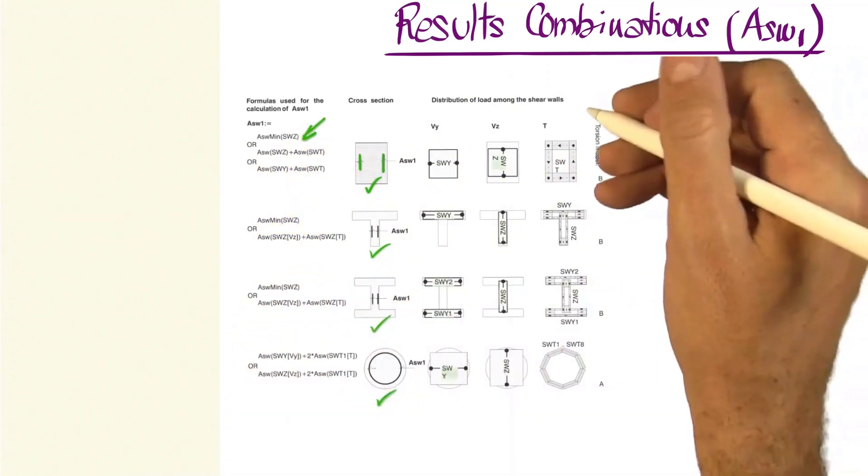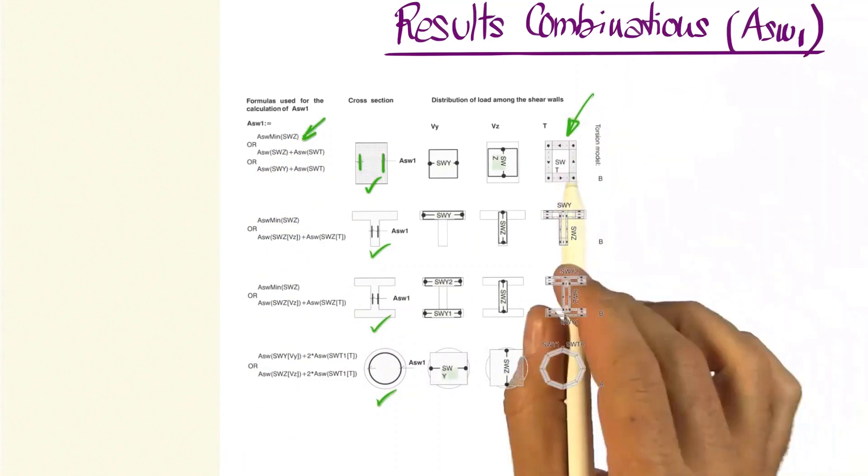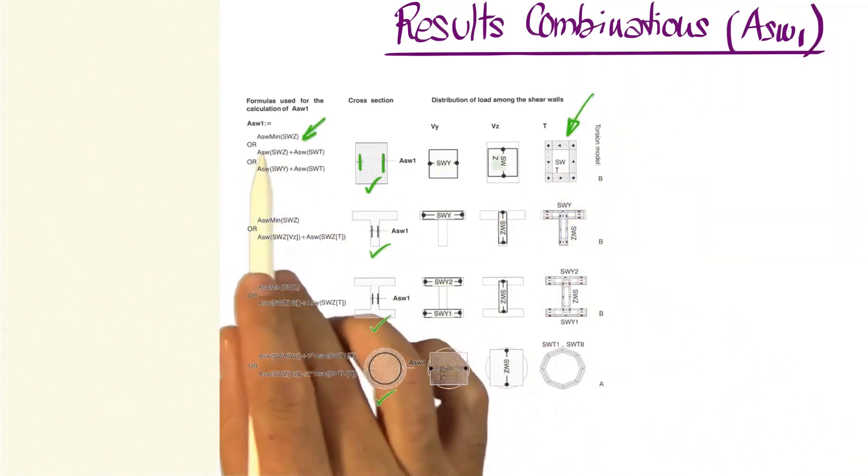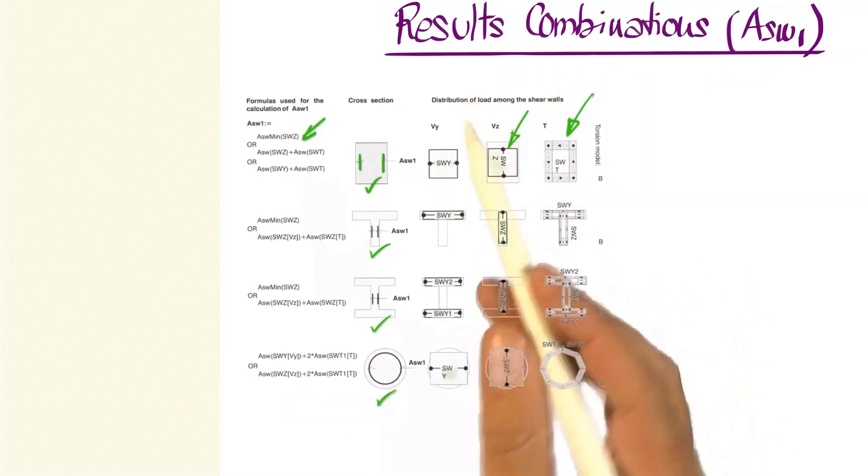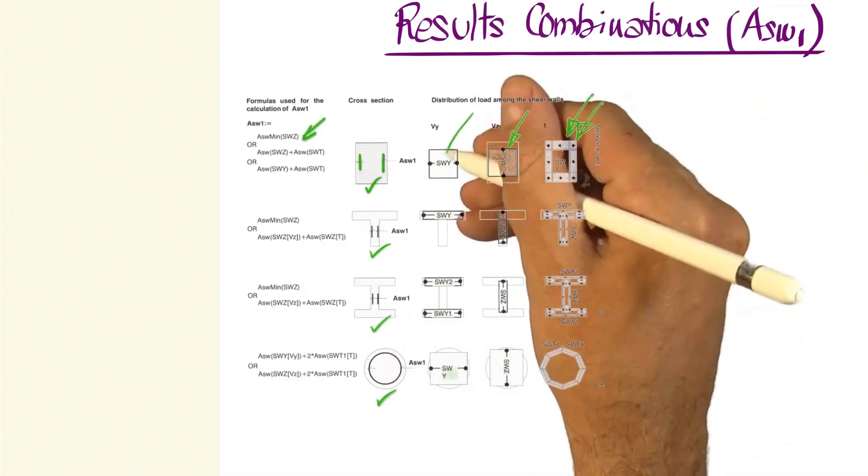or it could be the sum of the reinforcement corresponding to the shear wall that the program determined internally for torsion plus the reinforcement the program determined for our shear wall in Z, and likewise, that of torsion plus the reinforcement necessary to resist shear in Y.